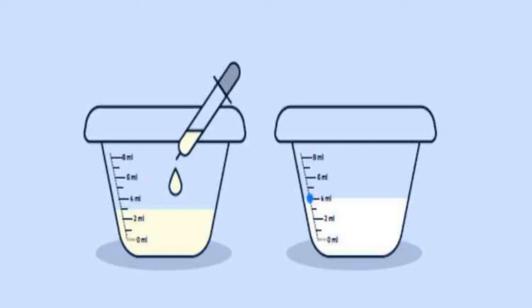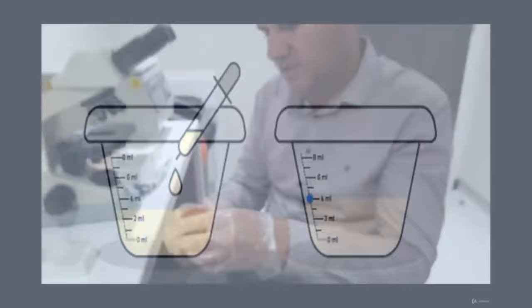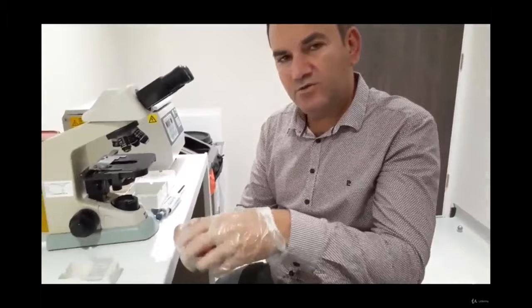So asthenospermia may occur. After the semen is given, we examine it one hour later — we're looking at its liquefaction. This semen has been waiting for about one hour. After one hour, the semen sample should be fluid like this. If it is fully liquefied, we call it normal liquefaction, meaning there is no liquefaction defect. If it has not liquefied after one hour, there is a problem.